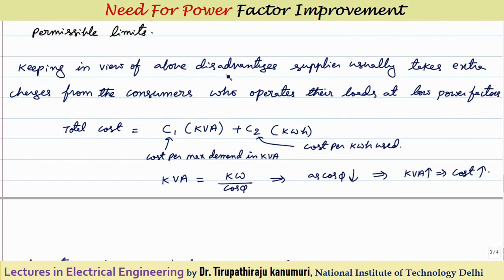Keeping in view these disadvantages, the supplier wants the power factor to be unity — so that fixed costs, variable costs, and losses are all reduced and the line is used effectively. That is why they discourage consumers operating at low power factor by charging extra. Generally, if the power factor is maintained below 0.8, a fine is imposed, and a two-part tariff is applied.